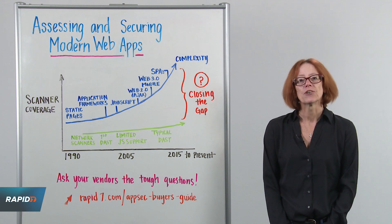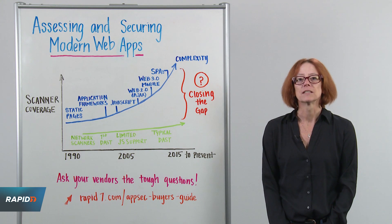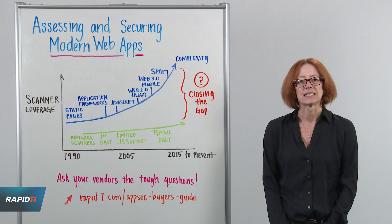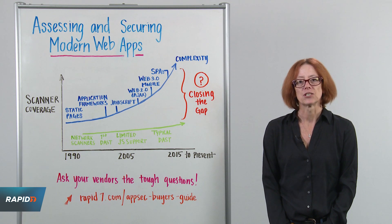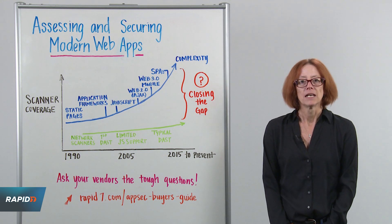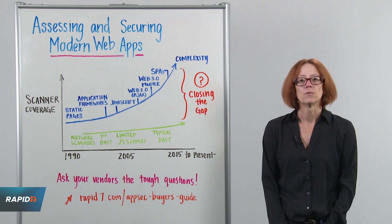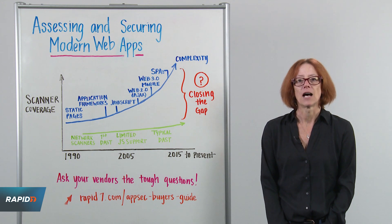For security professionals, keeping up with application complexity is tough, especially in today's world. Back in the day, web applications were built to present information to a reader — that's it. No or very little engagement, nice and static, and easy for the quarterly manual pen test to help with those pesky risk reports.